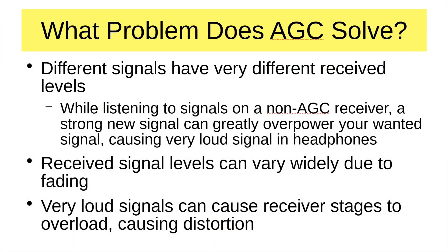What is automatic gain control? The original name was automatic volume control, which better describes what it is, but that's done at audio frequency. AGC is done earlier in the system. The problems we're trying to solve: different signals can have very different received levels. On a non-AGC receiver, a very strong incoming signal can greatly overpower the wanted signal, causing a nearly painful level in the earphones. Also, received signals can vary widely due to fading, so AGC keeps them at a relatively constant level. Very loud stations can overload receiver stages, causing distortion, so you want to turn down the gain.